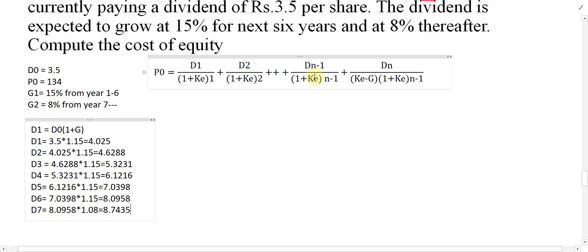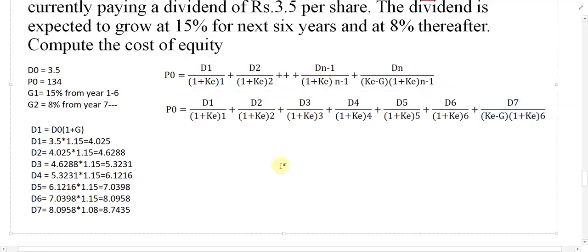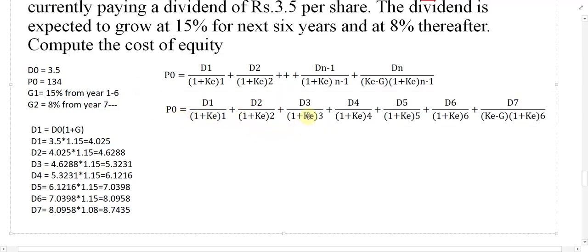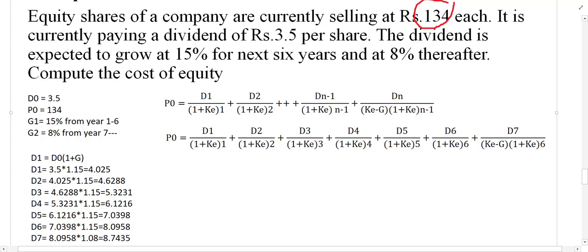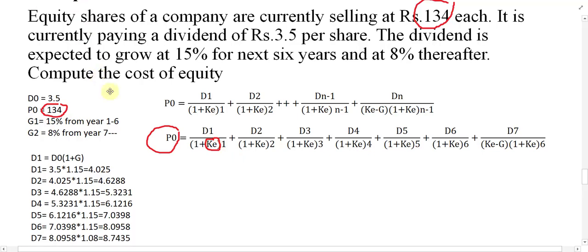Now apply the formula. P0 equals the sum of each dividend discounted at the cost of equity Ke, plus the terminal value from year seven. P0 = 134, so we need to find Ke such that the right-hand side equals 134. There is no direct formula — we must use trial and error. I will start by assuming Ke = 12%.